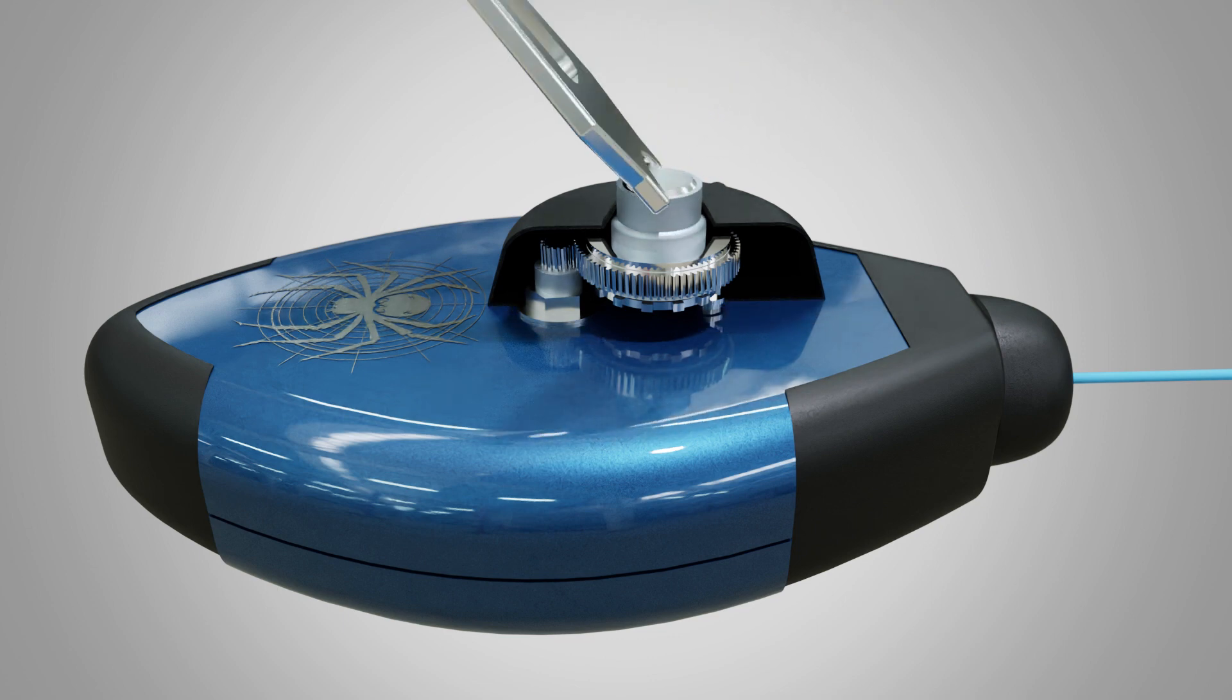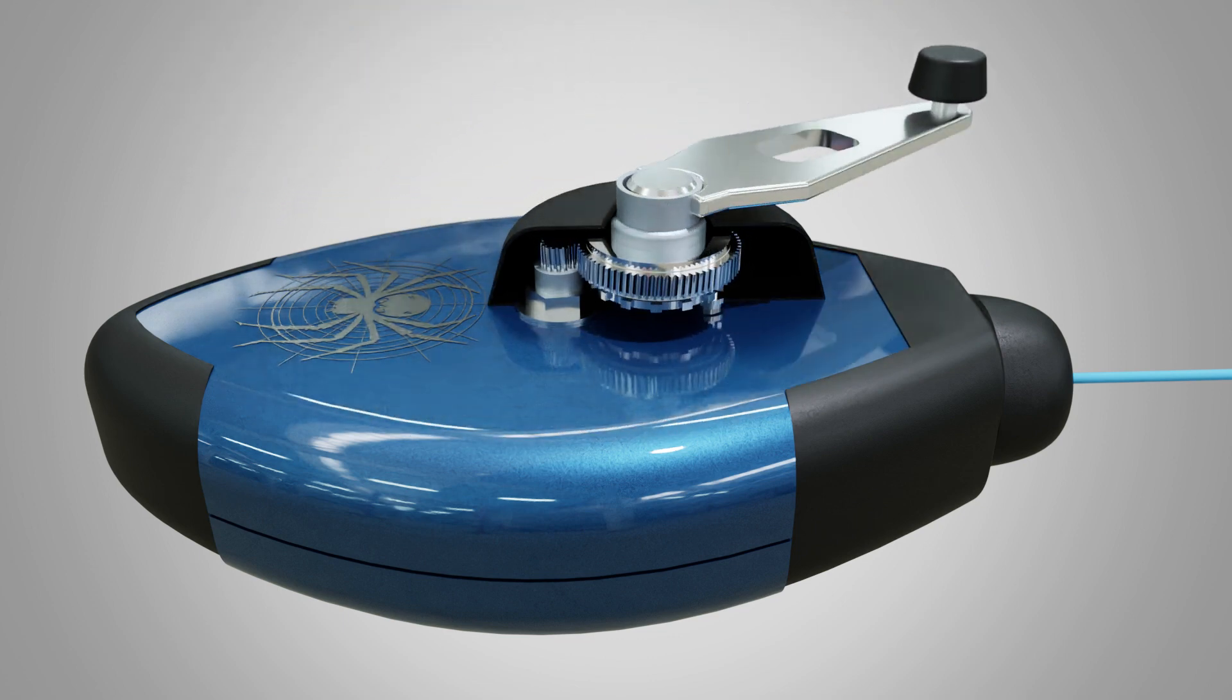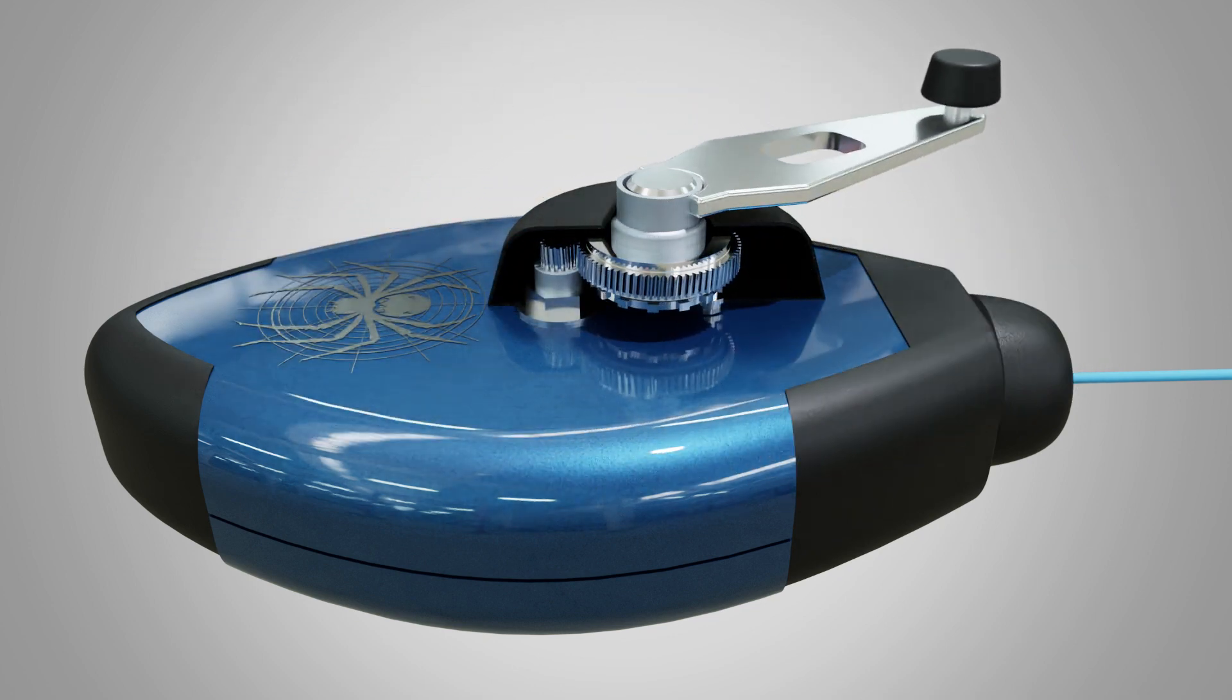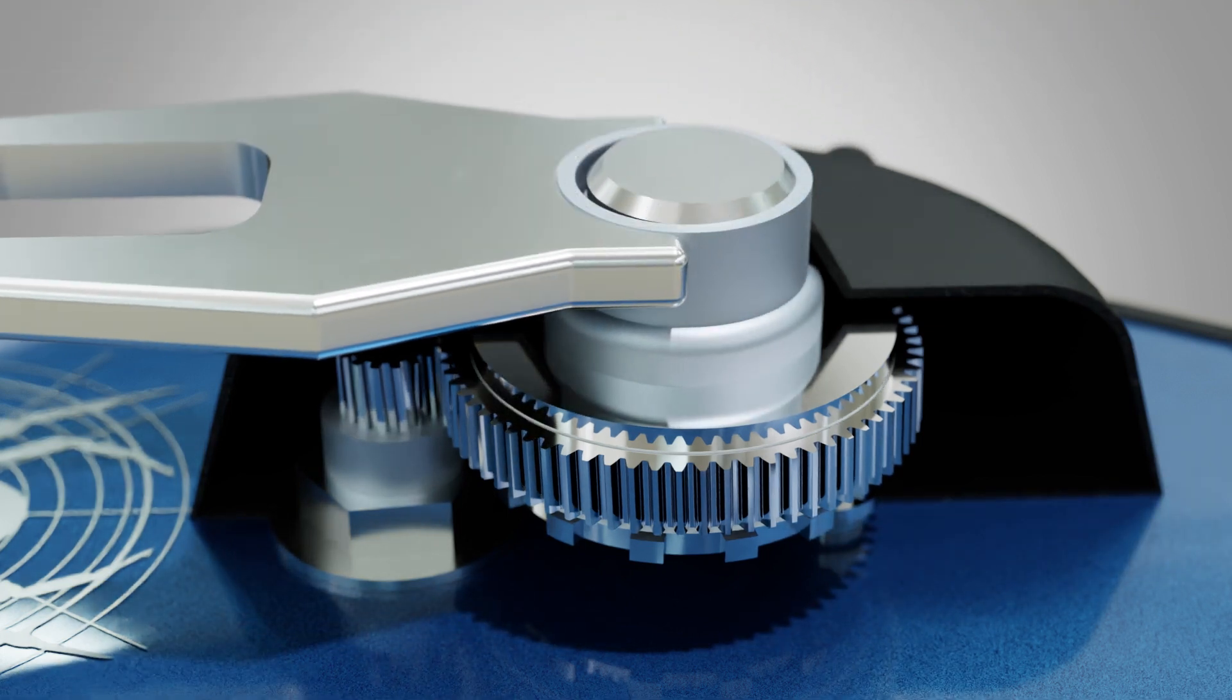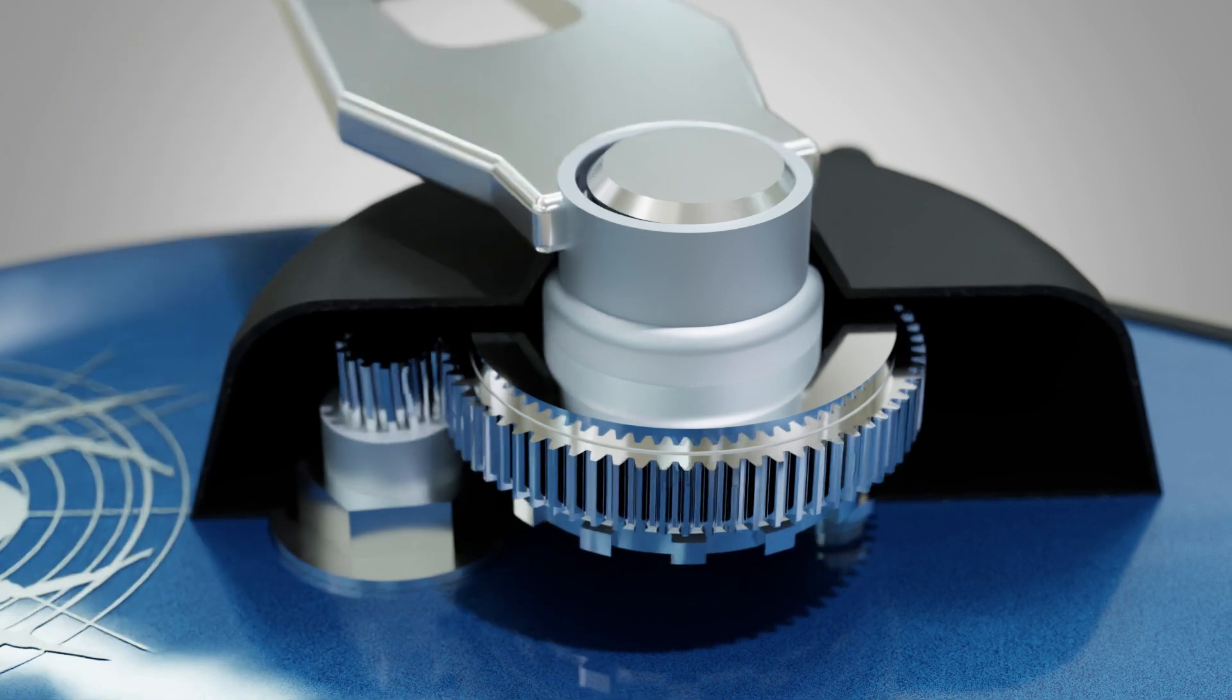But now, there's SpiderLine, a new carpenter's chalk line with enhanced features, created by inventor William Calvert. SpiderLine was developed with a completely separate gear drive box for the crank handle. This way, the gearbox is never exposed to chalk and cannot jam up.